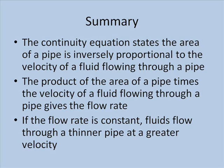In summary, the continuity equation states that the area of a pipe is inversely proportional to the velocity of a fluid moving through that pipe. The product of the area of a pipe times the velocity of the fluid gives the flow rate, or the volume of fluid moving per unit time. If the flow rate is constant, fluids flow through a thinner pipe at a greater velocity.